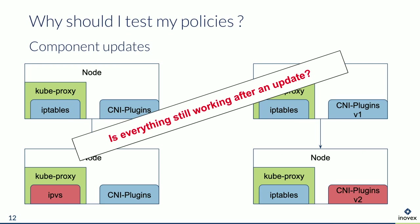There are conformance tests for Kubernetes which are nice to know you have a roughly working cluster, but the conformance tests currently don't test any network policies or RBAC rules. There are ideas to create conformance tests with different testing profiles that include network policies, but this is something for the future if someone implements it.